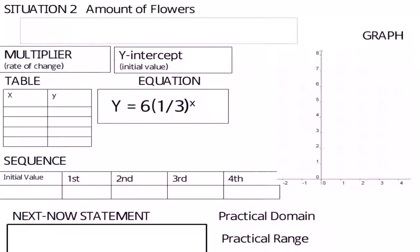In this case, they've given me an equation. That's what I have been given to start with. I'm going to start with identifying my multiplier and my y-intercept. a is going to be my y-intercept, my initial value, so I'm going to write that down as 6. And then my base is my multiplier, 1/3.